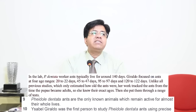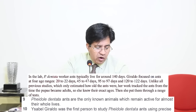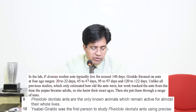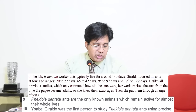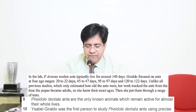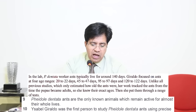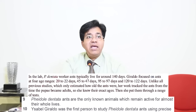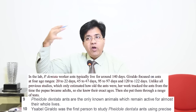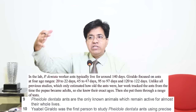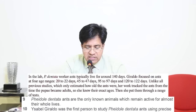'Unlike all previous studies, which only estimated how old the ants were, her work tracked the ants from the time the pupa became adults - she knew their exact ages. Then she put them through a range of tests.' 'Unlike all previous studies' means she was the first one to do something different. The word 'precise data' in the question corresponds to 'exact ages' in the passage. 'Unlike all previous studies' signals she was the first. So the answer for question 10 is True.